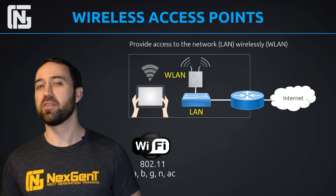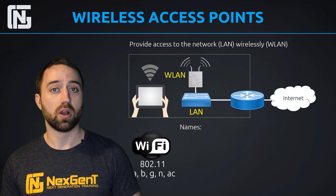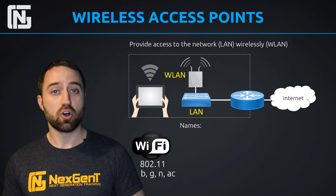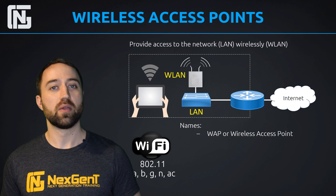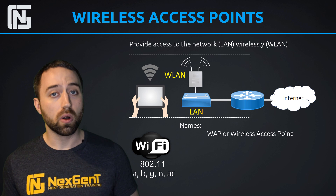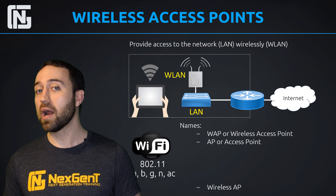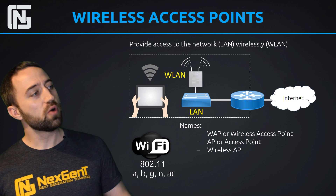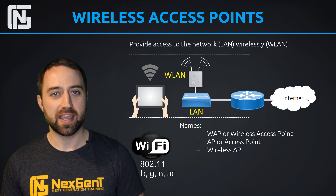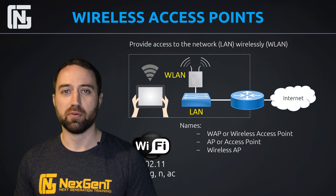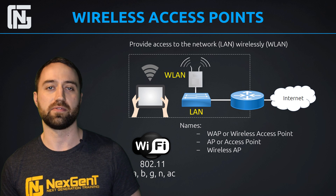Commonly out in the field we're going to have different names for our access points. We might call them a WAP — wireless access point — for short, or we might just say AP or access point, or wireless AP. For example: 'Hey Joe, go install that wireless AP.' 'Hey Bob, can you tell me where that AP is located?' Or 'Let's go install this WAP.' So there are many different ways you'll actually hear them called out in the field.